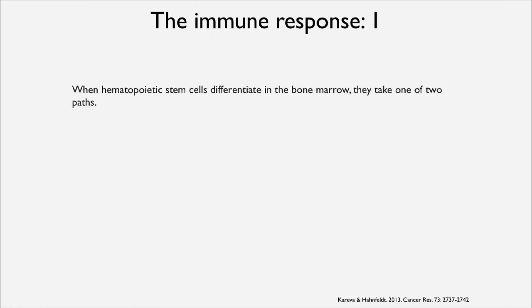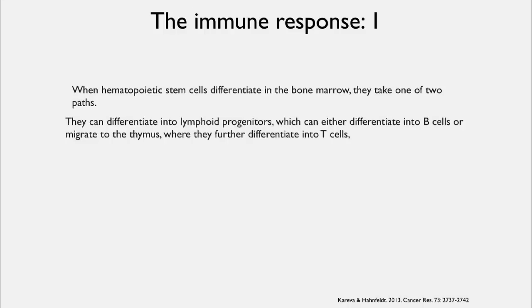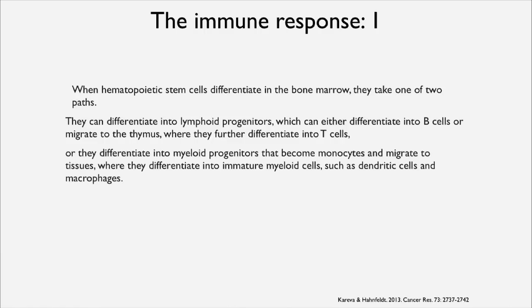When a hematopoietic stem cell — a cell which can produce a variety of immune cells — differentiates in the bone marrow, it can take one of two paths. It can go into lymphoid progenitors, leading to B cells that mature in the bone marrow or T cells that migrate to the thymus. Or it can differentiate into myeloid progenitors, which become monocytes, migrate to tissues, and become dendritic cells or macrophages. You almost have something like a phylogenetic tree coming out of the bone marrow, taking different paths to become different kinds of immune cells.